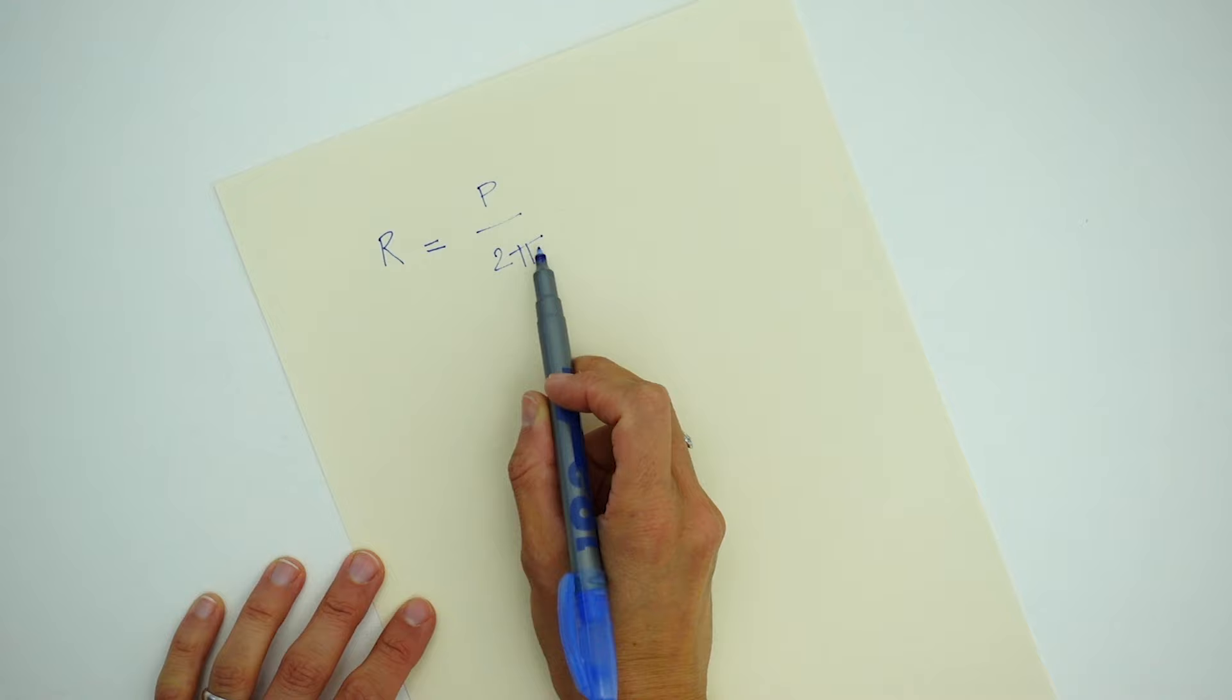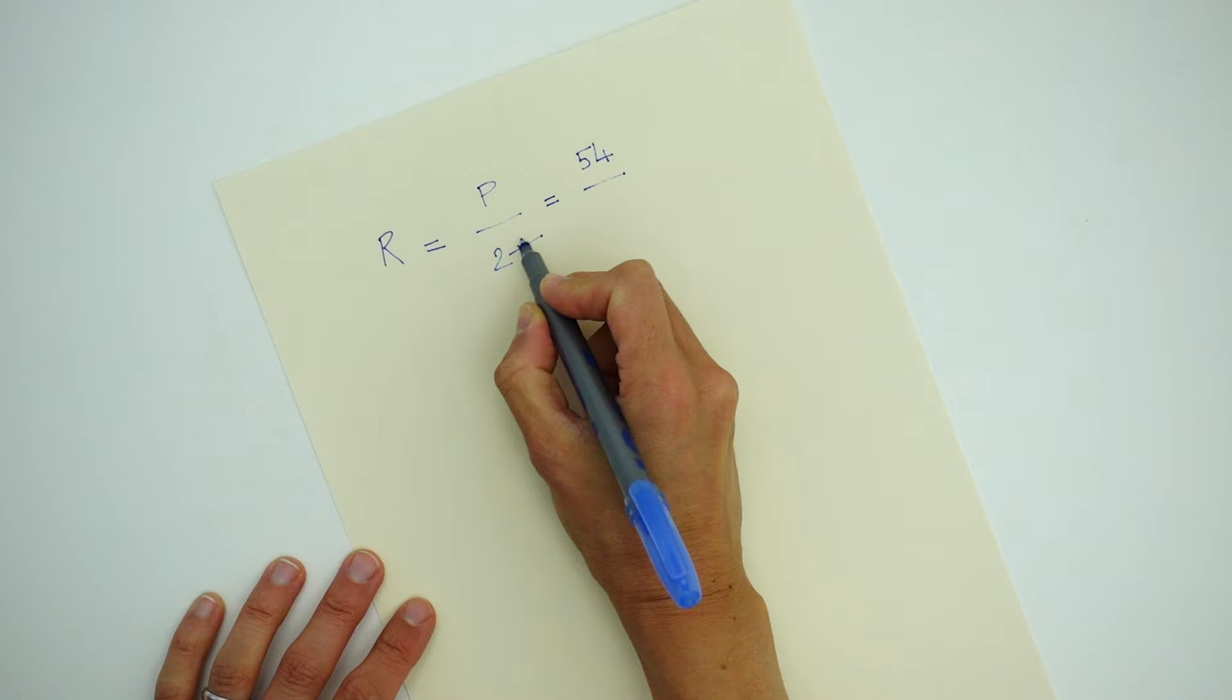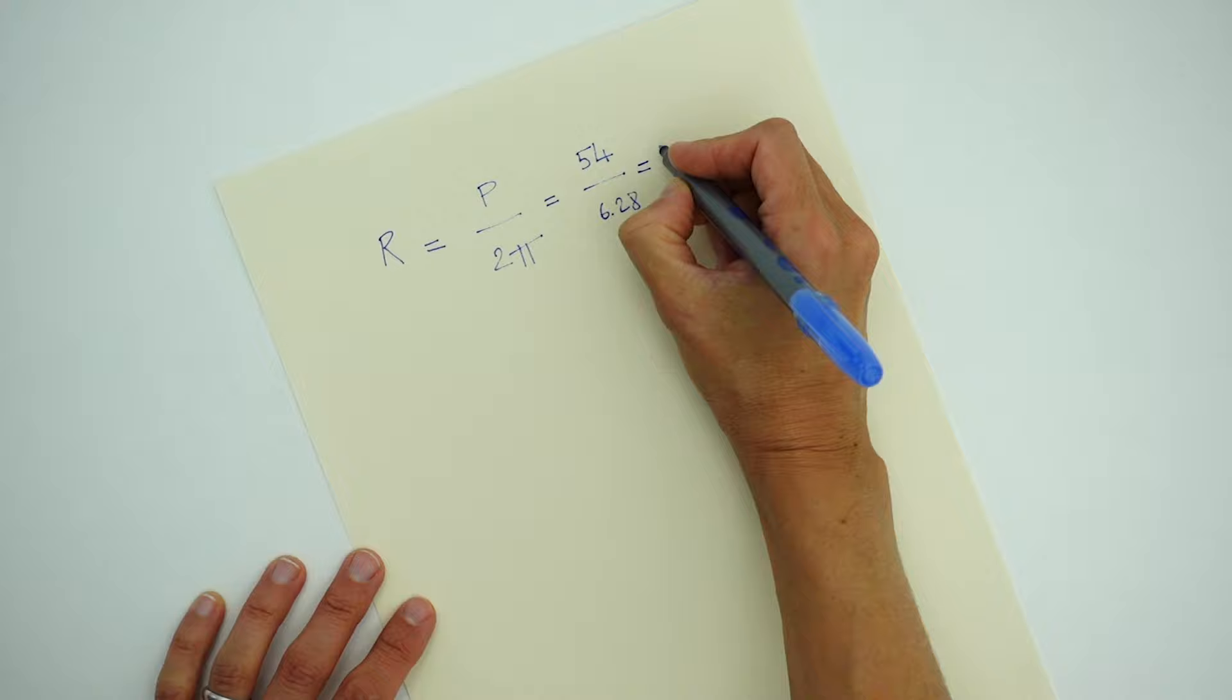Therefore we have our head circumference, 54 for me, divided by 2 times 3.14, that is 6.28. Just put these two numbers in your calculator, shake it and you'll get your radius measurement. In my case, 8.6 cm.